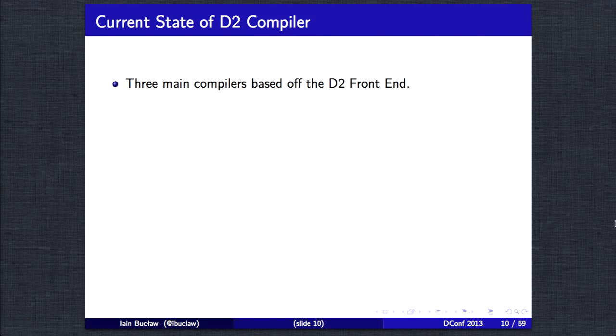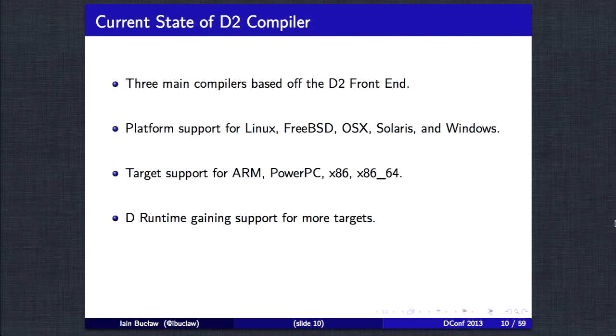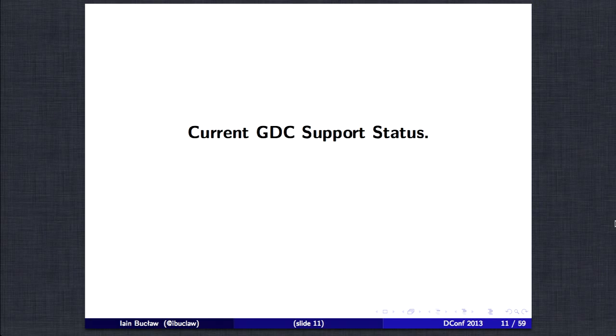And as for D2, the current state that we see today, well, we've got three main compilers based off the D2 frontend. Across them, we've got pretty much solid platform support for Linux, FreeBSD, OSX, Solaris, and Windows. And target support, ARM and PowerPC is pretty much covered between GDC and LDC. And all three of them do have x86 and 64-bit. And we also see that D runtime is gaining more support for more targets as we get people adding in more porting patches. And Phobos is becoming more platform agnostic.